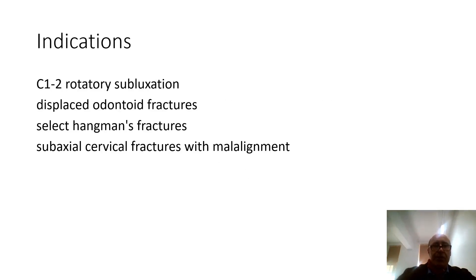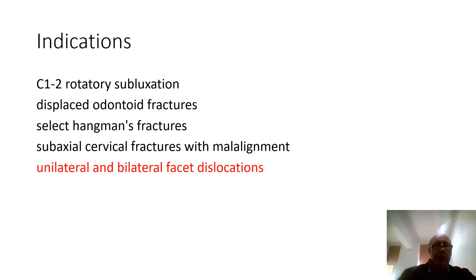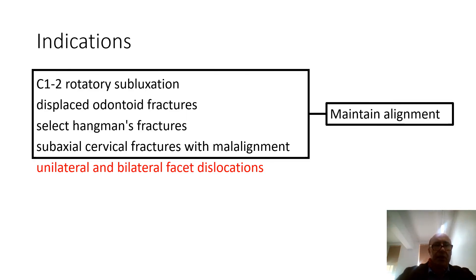Indications for traction are any unstable fractures or dislocations in the neck: C1/C2 rotatory subluxation, displaced odontoid peg fractures, Hangman's fractures, and unstable subaxial cervical fractures which are malaligned and require traction.